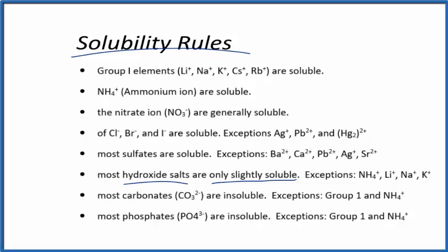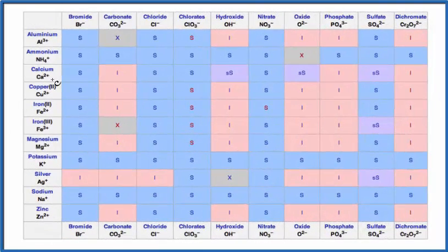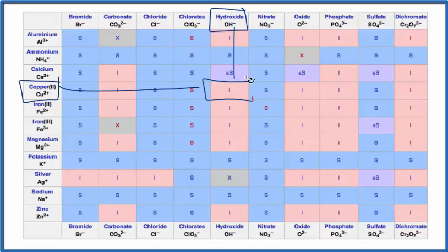The other way is look at a solubility chart. Here, we just find the positive ion, that's the copper 2 ion, and then the hydroxide, the negative ion, we go across, down, I. That means it's insoluble, and we're going to have a solid, and that solid falls to the bottom of the beaker as a precipitate.